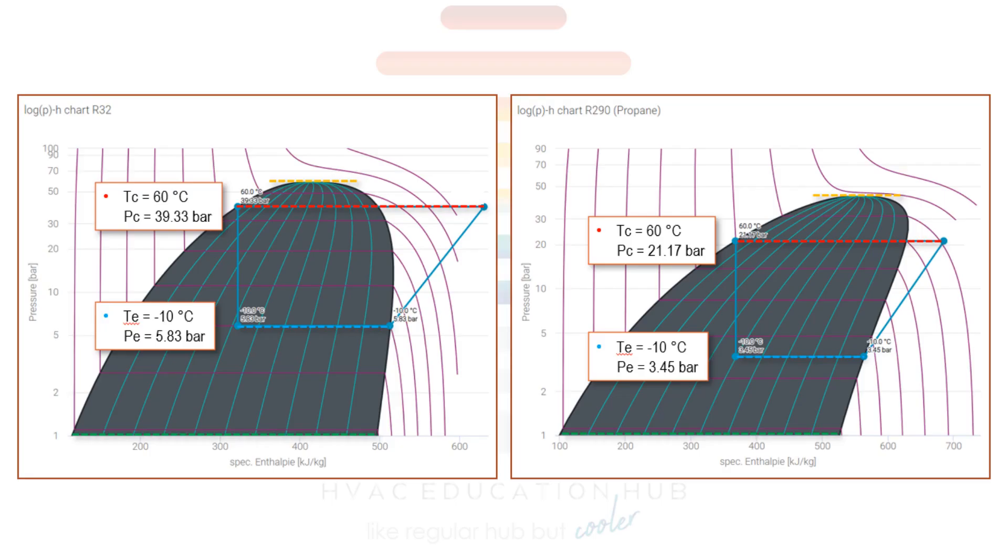If we compare working conditions on 60 degrees condensing temperature, on R32 we are around 39 bar. So almost on limit when our high pressure switch will stop the unit. And on R290 and 60 degrees Celsius, we have only 21 bar. So very low operating pressure, safety, and we can have higher temperature. Also, on evaporation side, on minus 10, we have 3.45 bar. And on R32, we have 5.83 bar on minus 10.